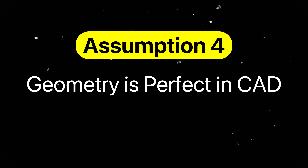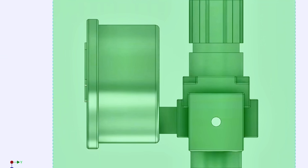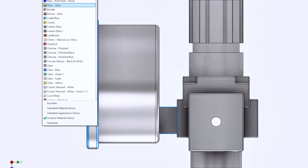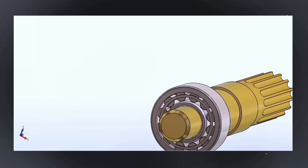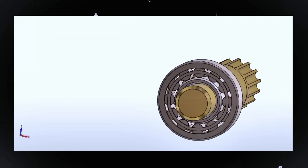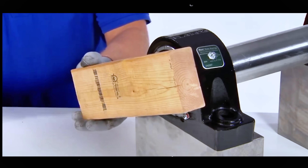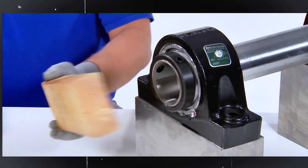Assumption number four is perfect geometry in CAD. In CAD, parts and geometries are mathematically perfect. The fillets are clean, holes are concentric, and faces are planar. But every manufactured part has imperfections. A milled slot might have a slight taper, holes might be off-center, and a sheet metal part might spring back. For example, a press-fit bearing might go in easily in CAD, but bind or seize due to small out-of-roundness in the hole. You have to account for these real-world variations by designing with the appropriate geometric dimensions and tolerances.